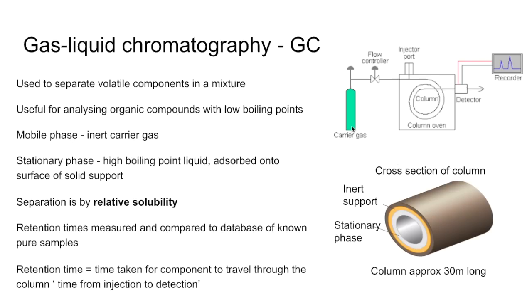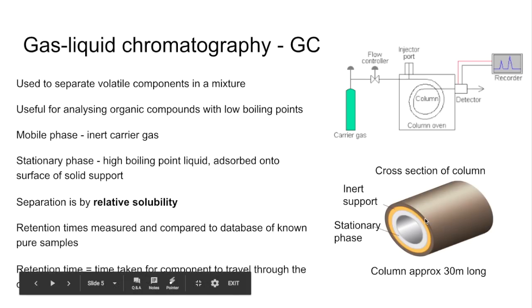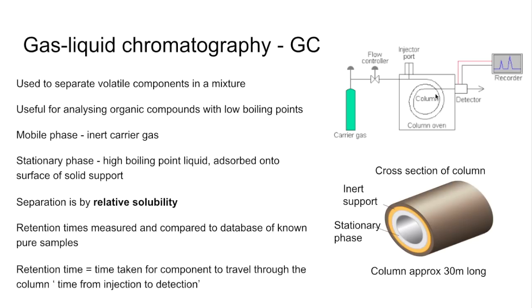The carrier gas is released and travels through. The sample is injected via a syringe. The carrier gas carries it through the column, 30 meters, and the components are interacting with the stationary phase by dissolving into it. Once they get through the column, the time it takes from injection to detection is measured and plotted on the chromatogram.